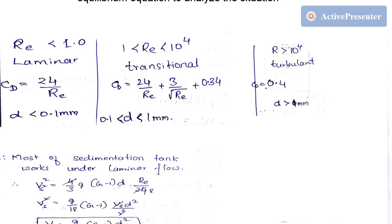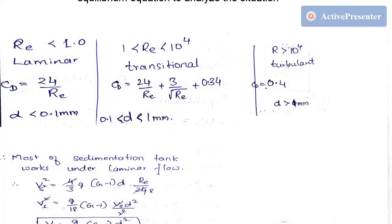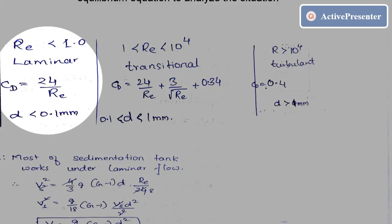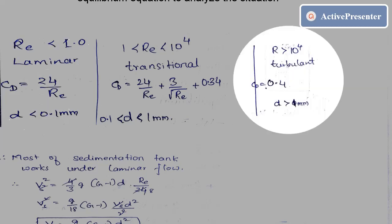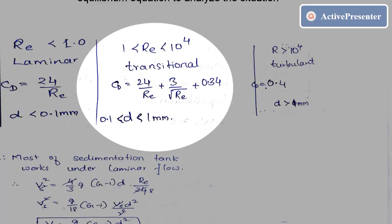There are three flow types: laminar, turbulent, and transitional. For laminar flow (Reynolds number less than 1), Cd = 24/Re, applicable when d is less than 0.1 mm. For turbulent flow (Re greater than 10⁴), Cd = 0.4, applicable when d is greater than 1 mm. For transitional flow (Re between 1 and 10⁴), Cd = 24/Re + 3/√Re + 0.34, applicable for particle sizes 0.1 to 1 mm.